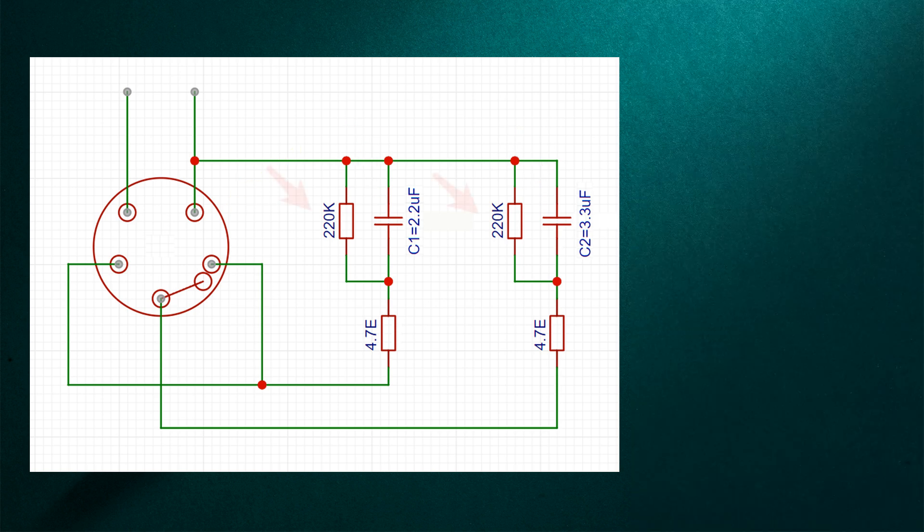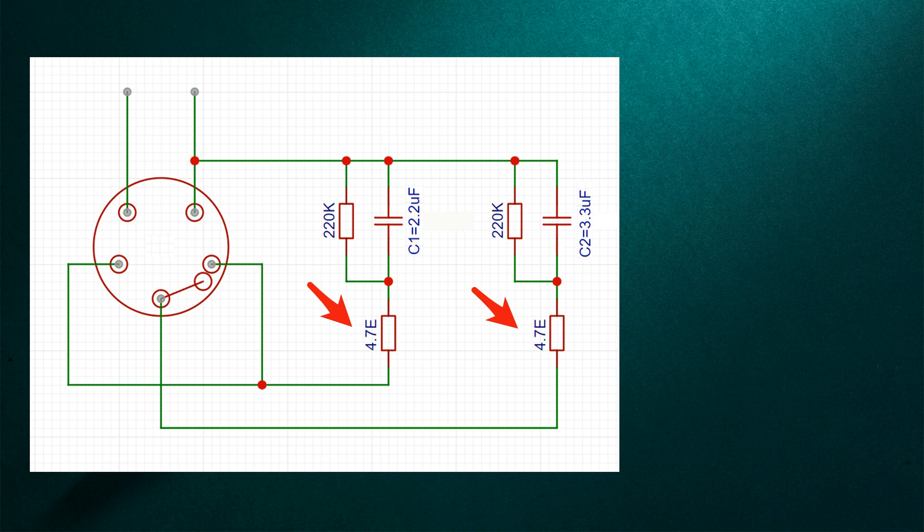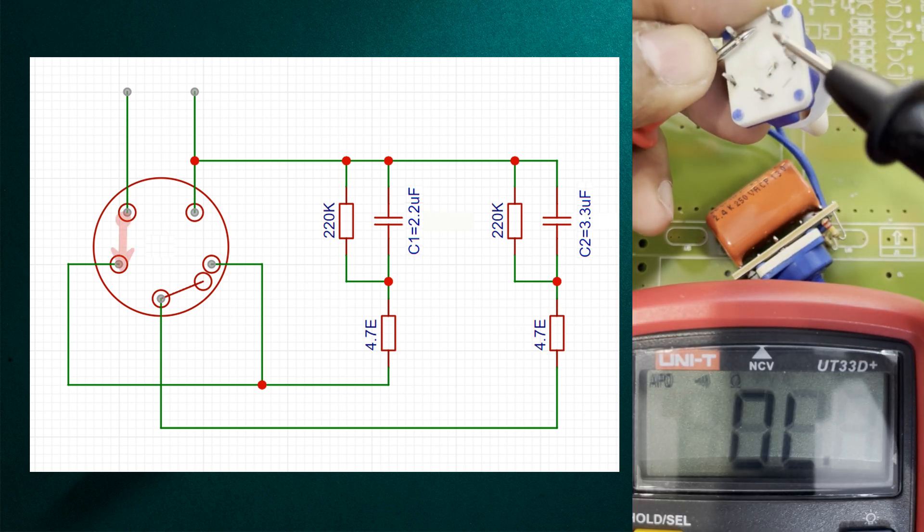These two high value resistors are used to discharge the capacitors when not in use. And these other two resistors are low value fusible resistors used to protect the circuit as well as to limit the current.